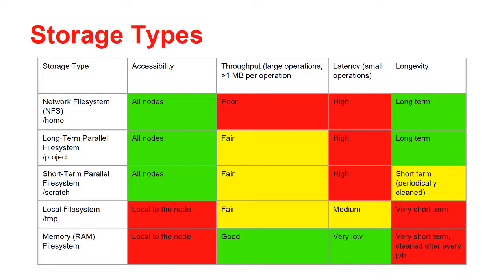The home file system is good to store important long-term files like your source code. Then we have a long-term parallel file system under project. This is accessible from all nodes. Throughput is fair and latency is high, and the storage is long-term, so any files you put in there will be there as long as you have your account.